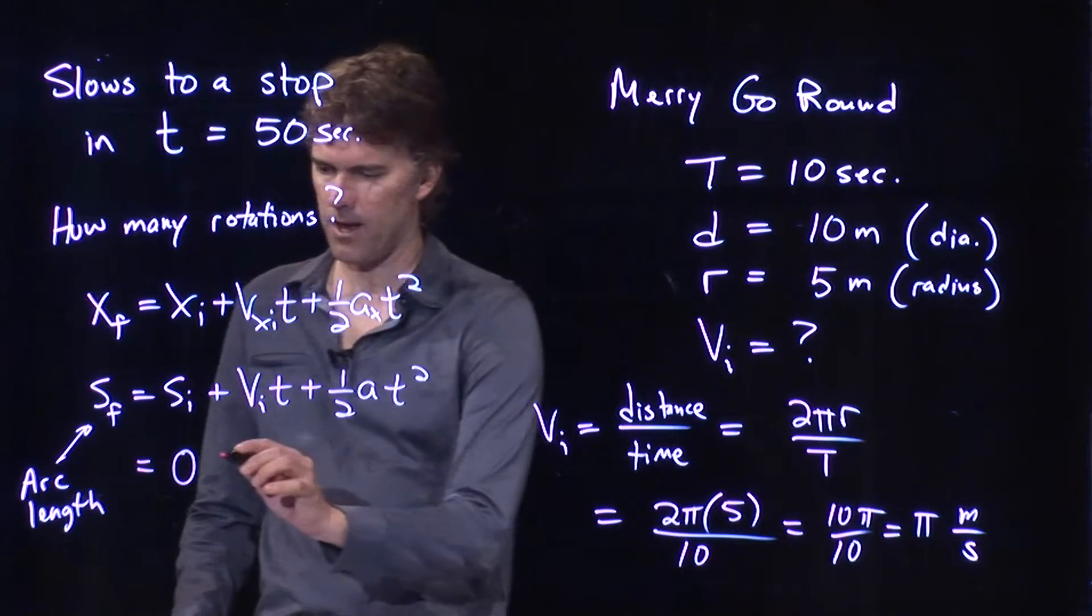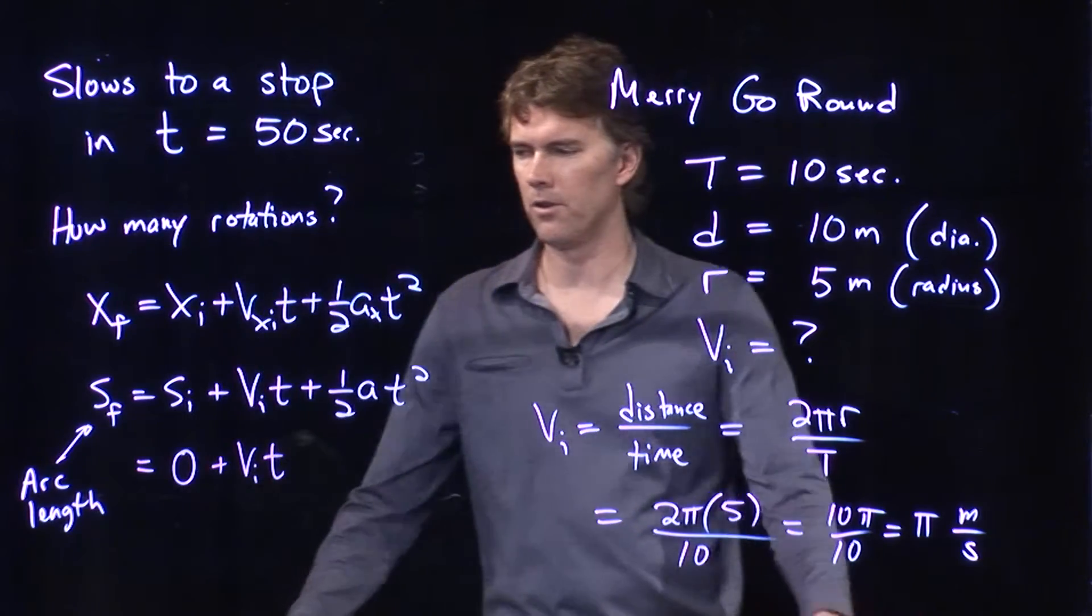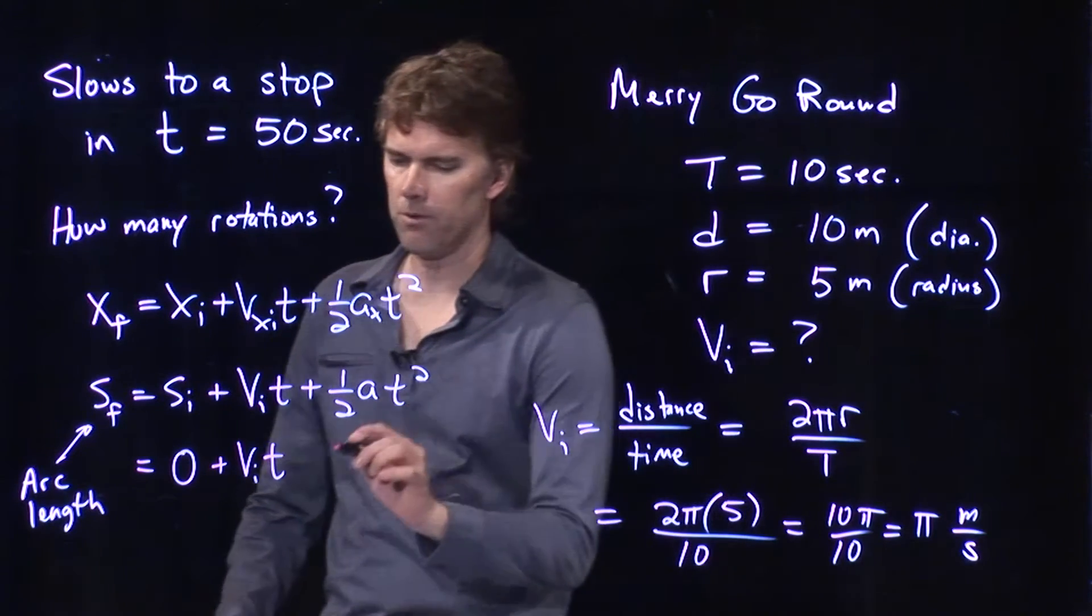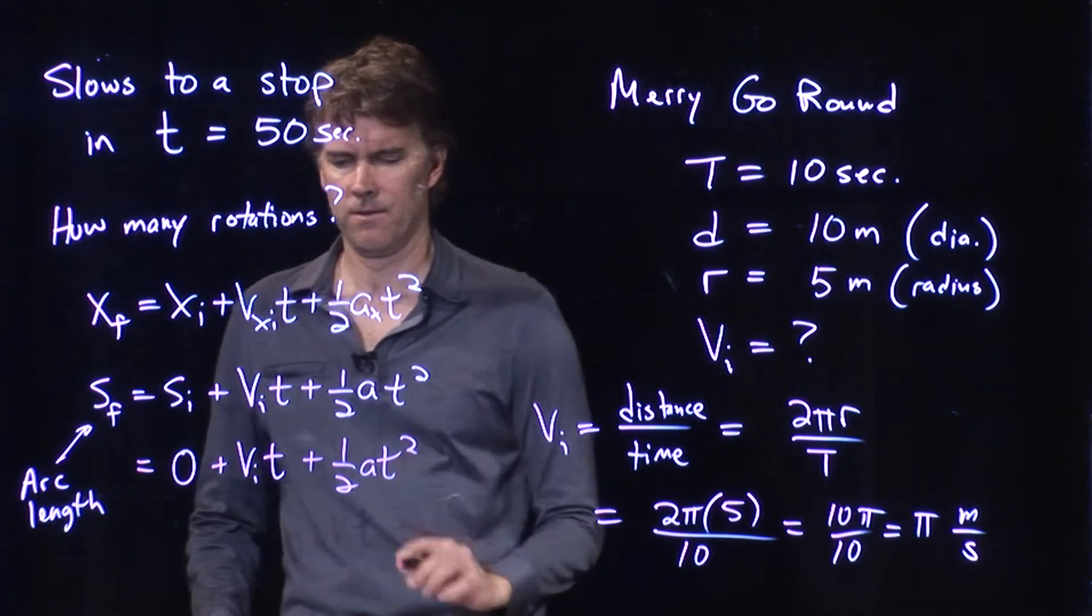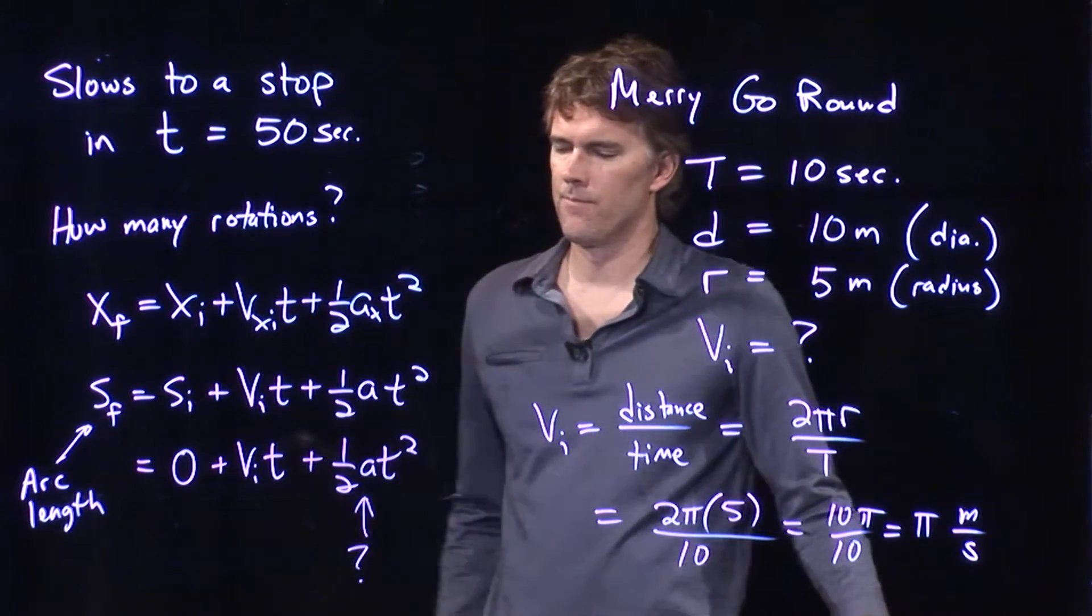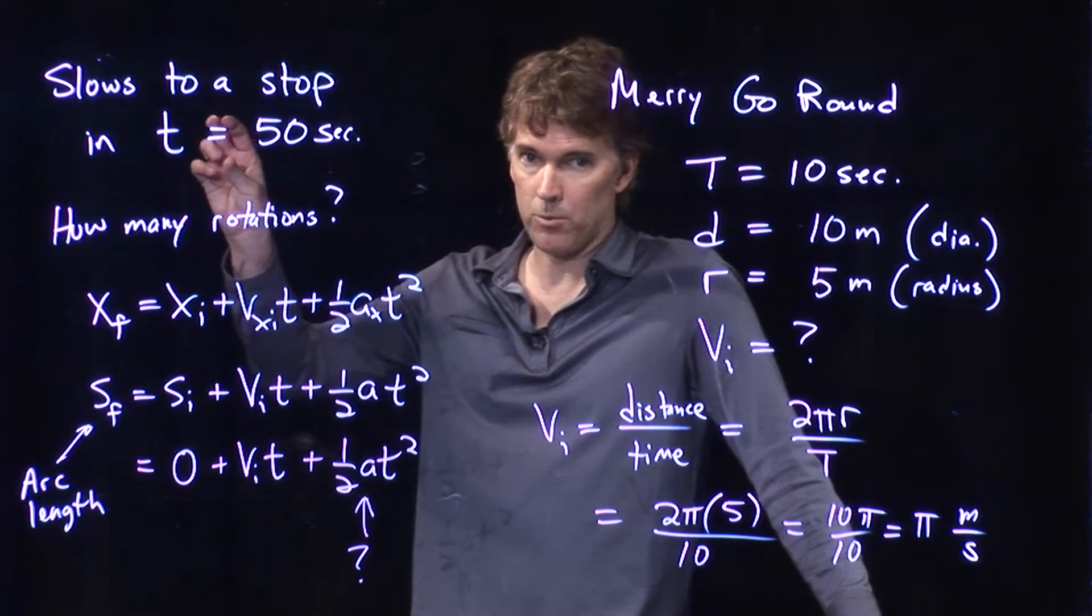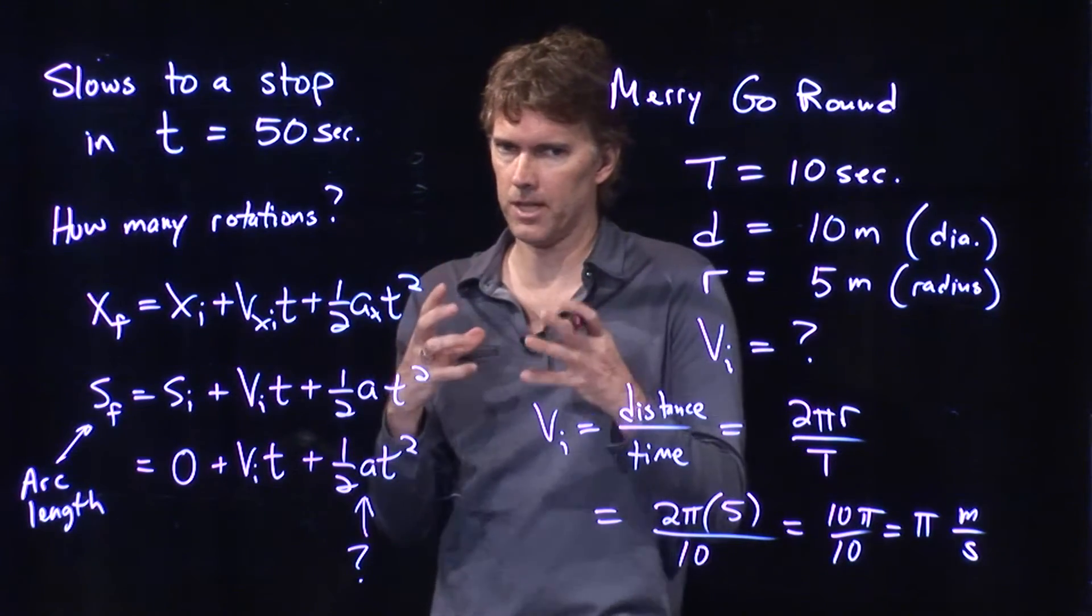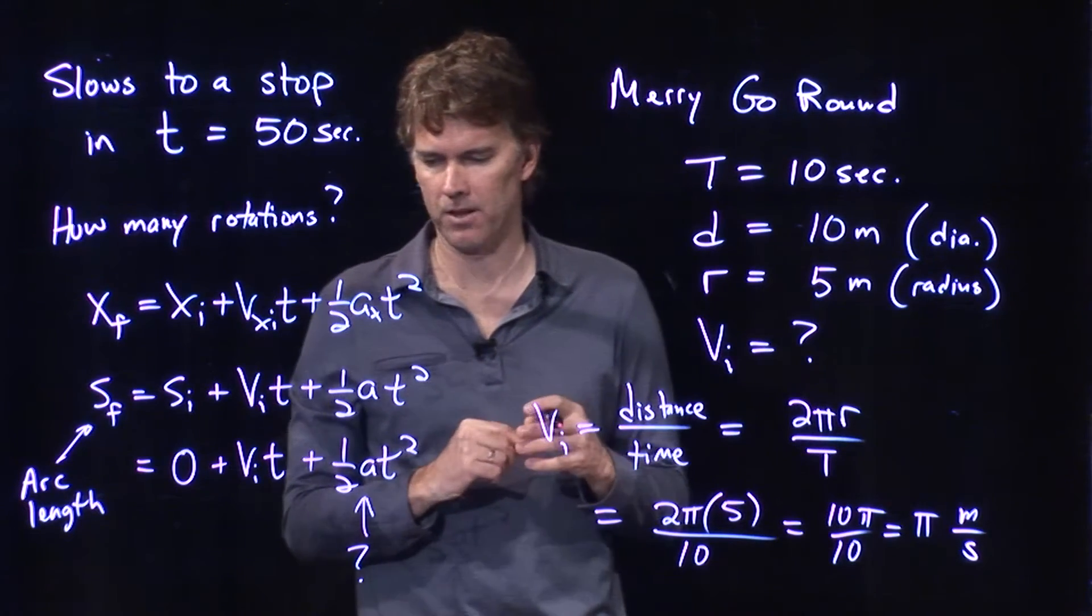V initial, we already have that. We also know t, time, but we don't know a. And we don't know this number right here. All we know is that this thing is slowing to a stop, which means it does have some acceleration, right? There's something that's slowing down this merry-go-round. But we don't know exactly what that acceleration is.